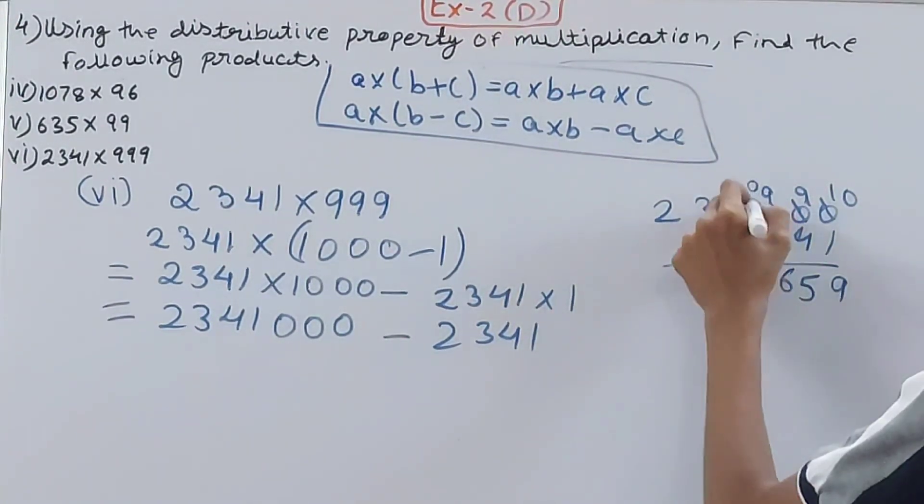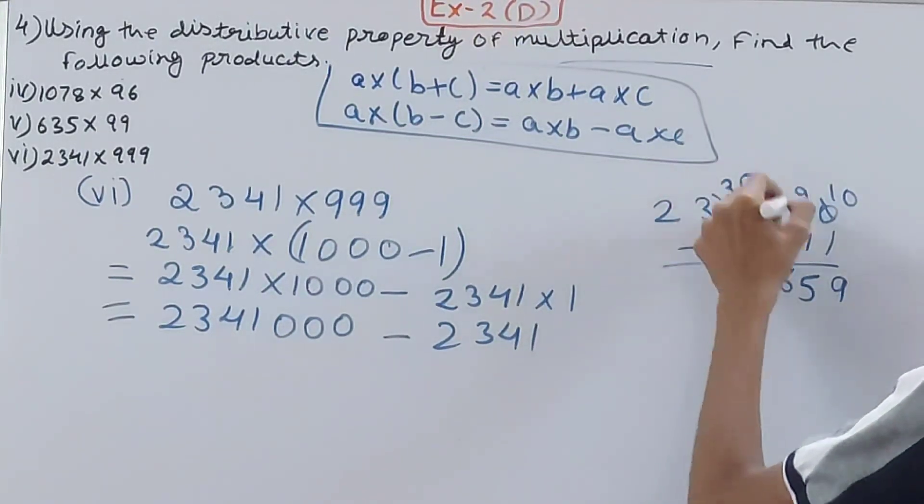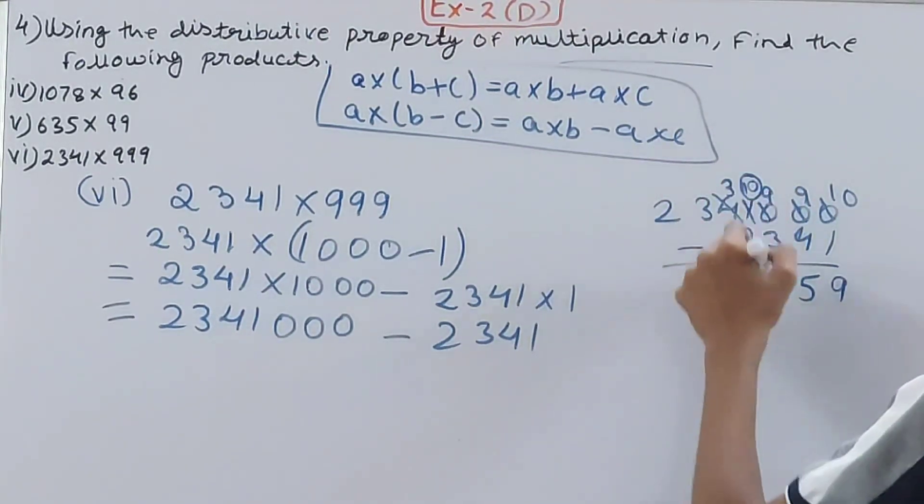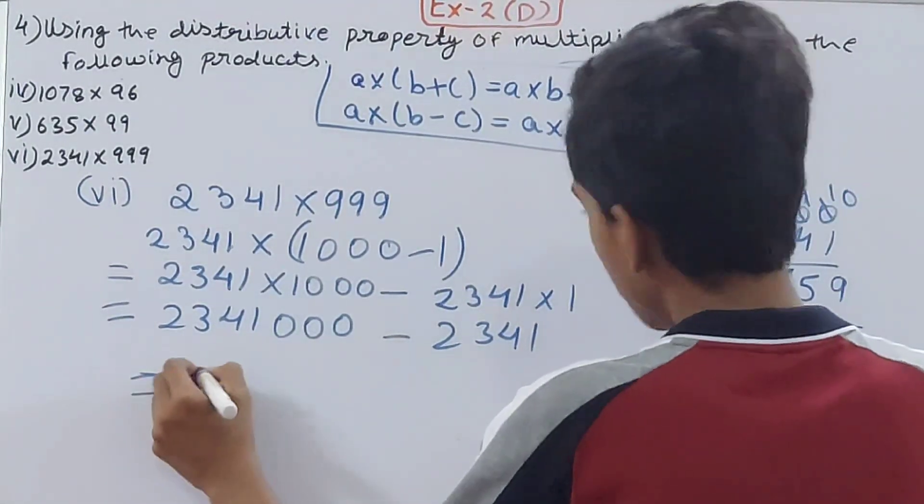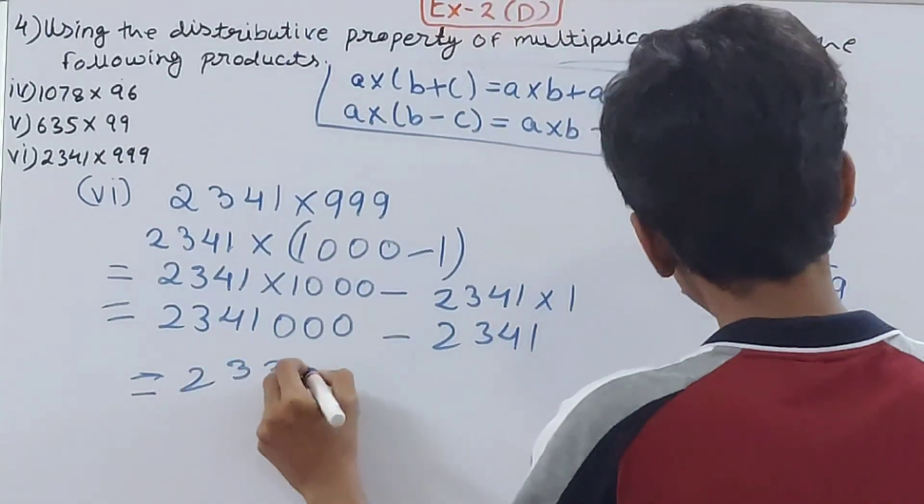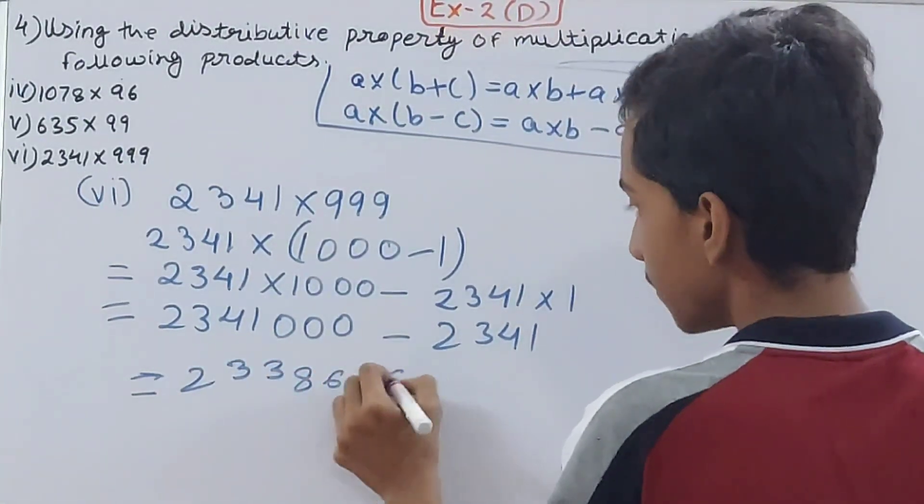Solve this: 2,341,000 minus 2,341 equals 2,338,659. That's 23 lakhs 38,659.